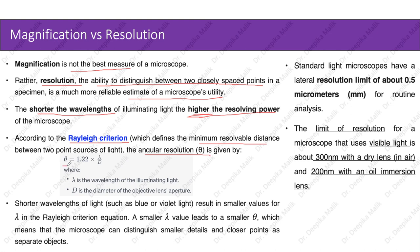The formula is: theta equals 1.22 multiplied by the wavelength of the illuminating light, divided by the diameter of the objective lens aperture. In optics, an aperture is a hole or an opening through which light travels. Shorter wavelengths, such as blue or violet light, result in smaller values for wavelength in the Rayleigh criterion equation. A smaller wavelength leads to a smaller angular resolution, which means the microscope can distinguish smaller details and closer points as separate objects.